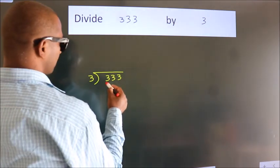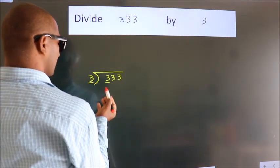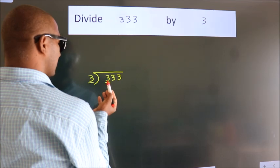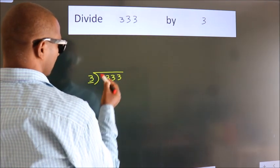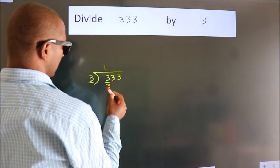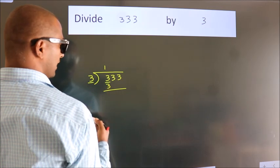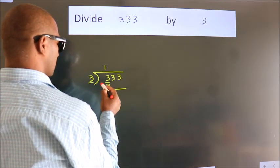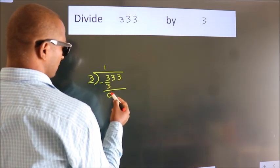Here we have 3, and here 3. When do we get 3? In the 3 table: 3 once is 3. Now we should subtract. We get 0.